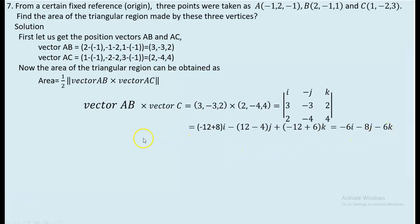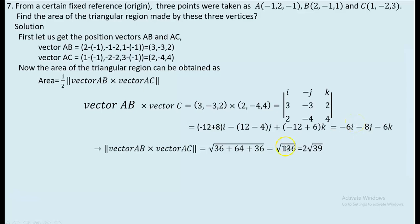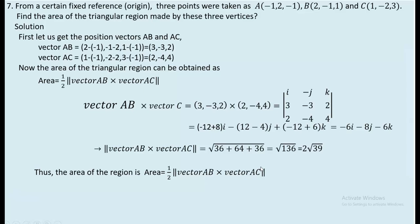Now we determine the norm of the obtained cross product. The components are -6, -8, and -6. Taking the sum of squares: (-6)² + (-8)² + (-6)² = 36 + 64 + 36 = 136. The area of the triangle is half of this norm. Taking half of √136, we obtain the area of the triangle as √34 — wait, actually the area of the triangular region is √39.